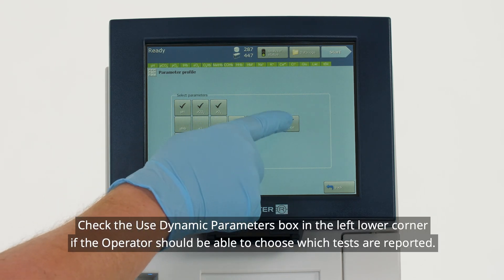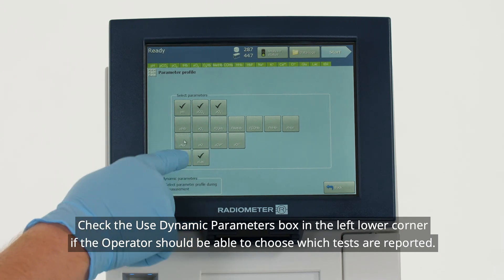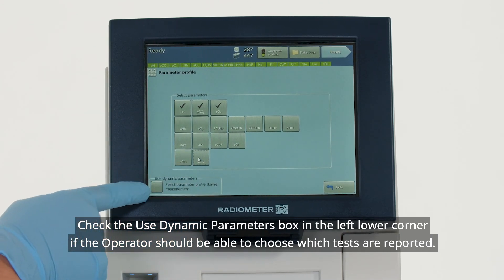Check the Use Dynamic Parameters box in the left lower corner if the operator should be able to choose which tests are reported.